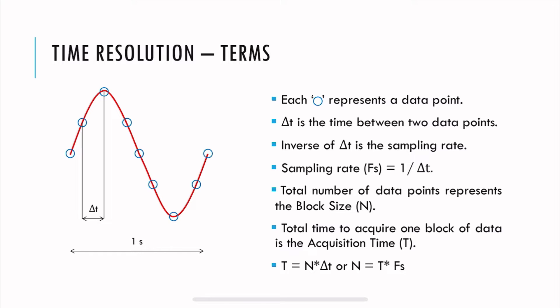Let's say we have an analog signal captured for one second that we need to digitize. The circles represent points on the analog signal being digitized, and delta t is the time between those two points — it is the same everywhere. The inverse of delta t is the sampling rate, denoted fs. The total number of data points is the block size N, and the total time to acquire one block of data is the acquisition time. The relation is: T = N × delta t, or N = T × fs.